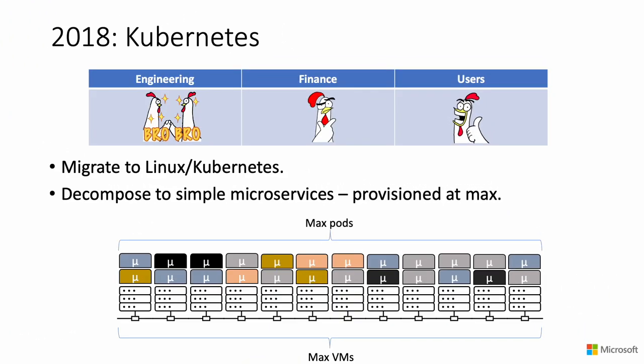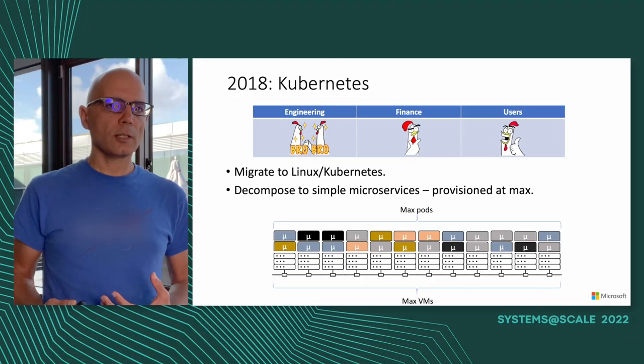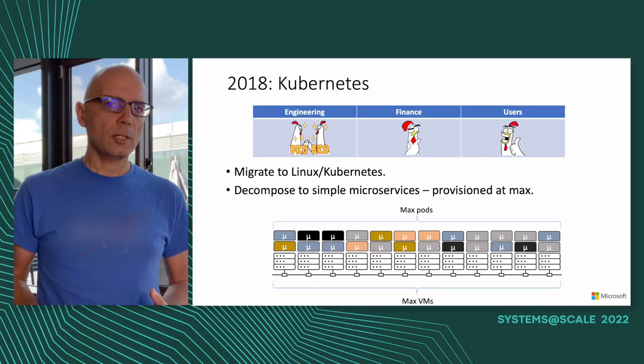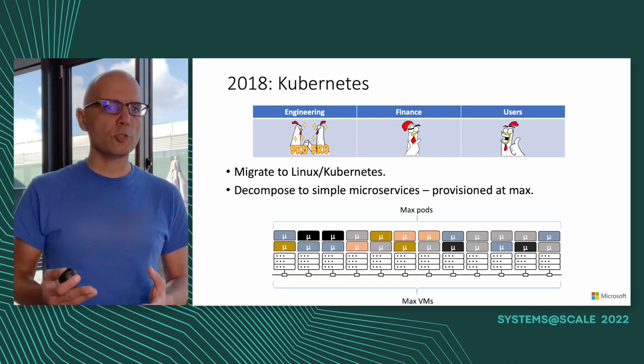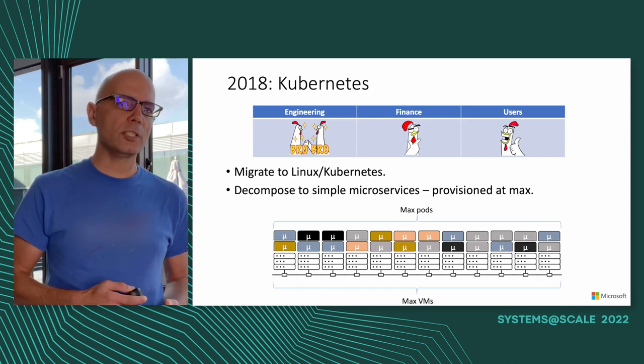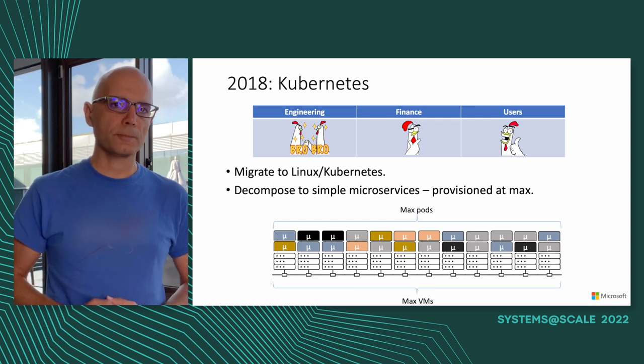In 2018, we decided to switch to Kubernetes. We migrated our workloads from Windows to Linux, then decomposed our application server into front-ends and back-ends — simple client and server microservices. Because we didn't want to risk our users' experience, we still provisioned everything at max. All we did was switch to Kubernetes and, instead of using physical hosts, we used virtual machines. Users were happy. Everyone was happy.